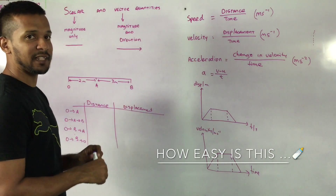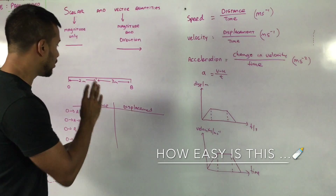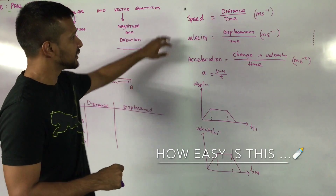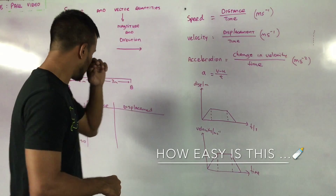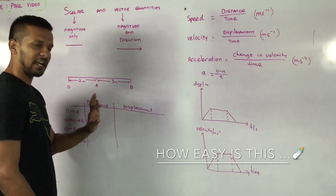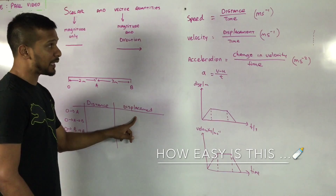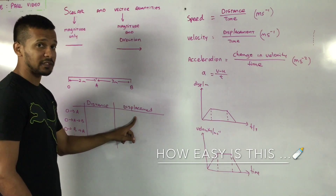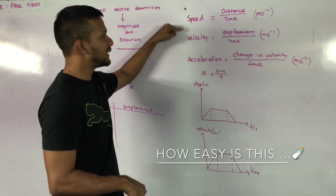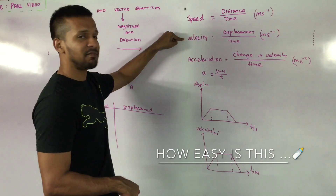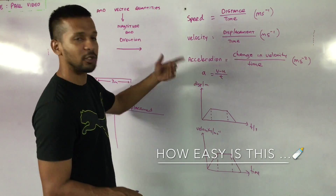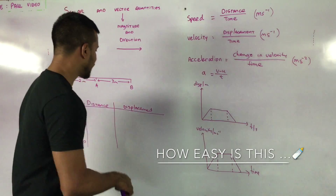We look at four quantities today: displacement, distance, speed, and velocity. Distance is a scalar quantity because direction doesn't matter. Displacement is a vector quantity because direction matters. Speed is a scalar quantity. Velocity is a vector quantity. And later we look at acceleration, which is also a vector quantity.